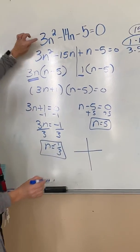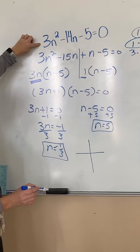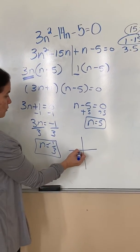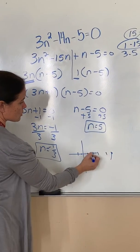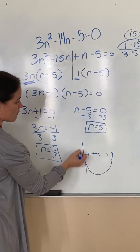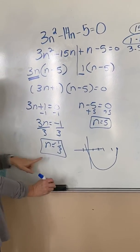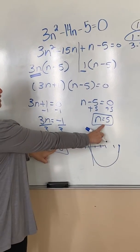So if I have a parabola, I know it's a happy face because that is positive, and it's going to go through negative 1/3 and 5, wherever that is. 1, 2, 3, 4, 5. And then I have a parabola. So my solutions are negative 1/3 and positive 5.